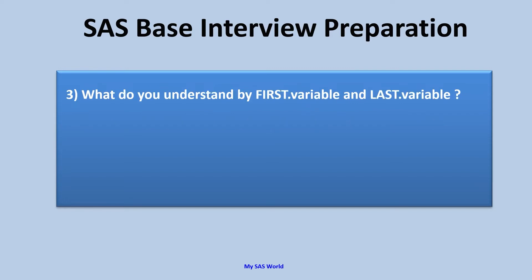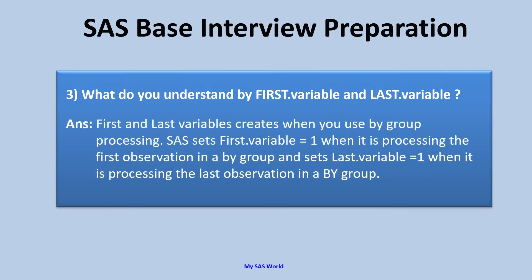What do you understand by first dot variable and last dot variable? This is the most amazing concept when you work in base SAS. First and last variables are created when you use by group processing. SAS sets first dot variable equal to one when it is processing the first observation in a by group, and sets last dot variable equal to one when it is processing the last observation in a group. For example, if we have duplicate account numbers like 1111, for the first observation in that group, first dot account number equals one, and when reading the last observation, last dot variable equals one and first dot account number equals zero.